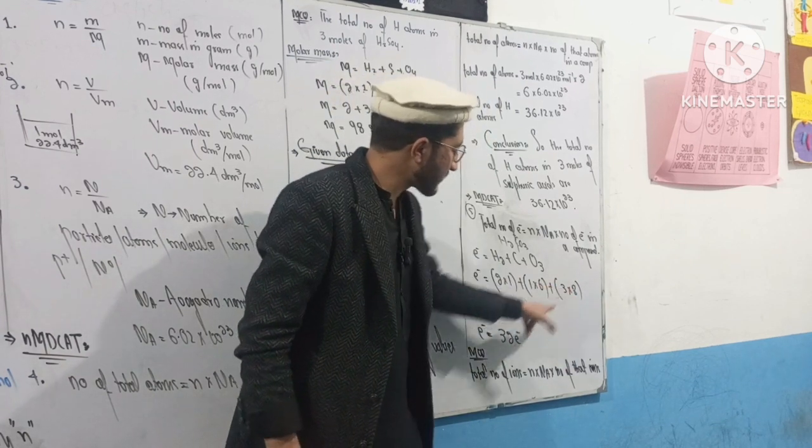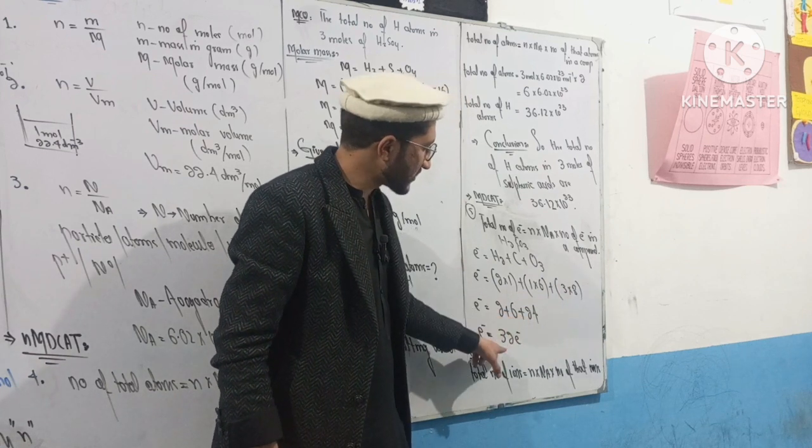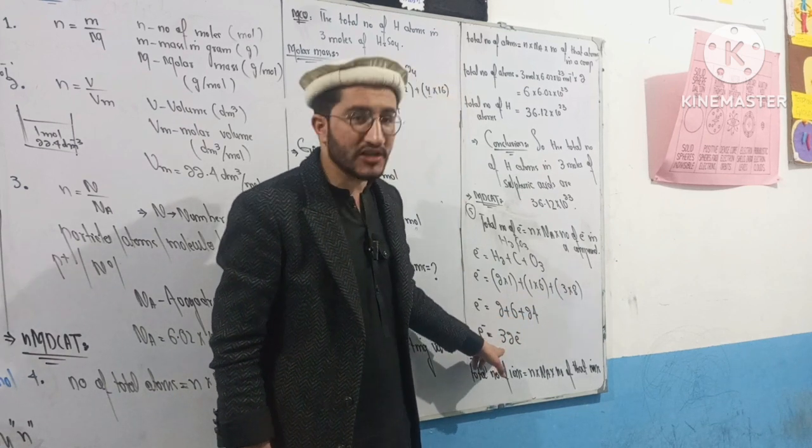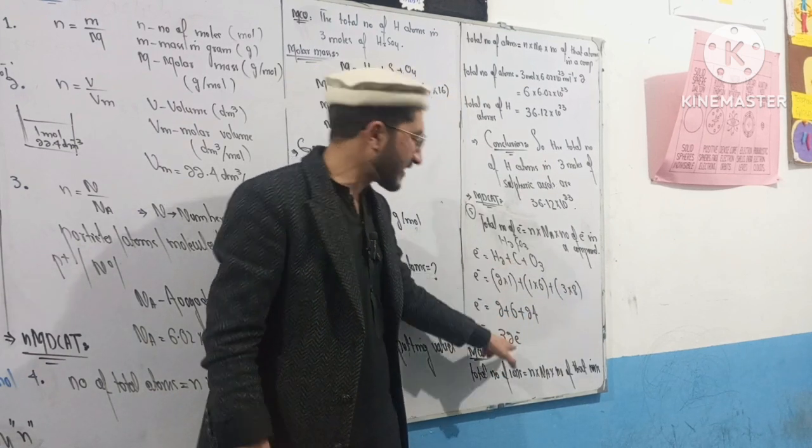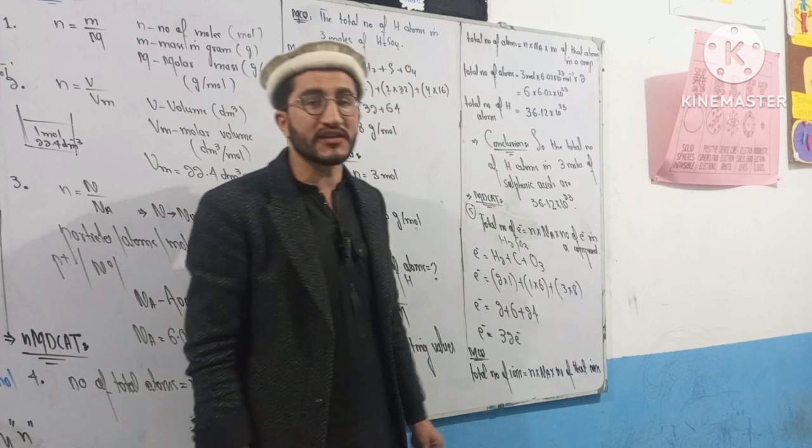For carbonic acid H₂CO₃: hydrogen has atomic number 1, carbon has atomic number 6, oxygen has atomic number 8. There are 3 oxygen atoms in the formula.